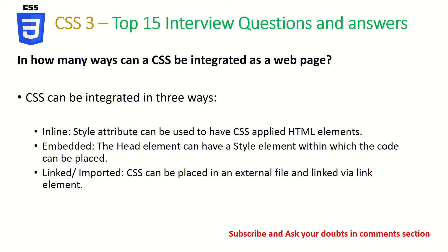In how many ways can CSS be integrated in a web page? CSS can be integrated mainly three ways: inline styling, embedded — which is putting a style tag directly in the head section — and last is to import or link through an external style source file. Those are the three ways we can incorporate CSS into our application.